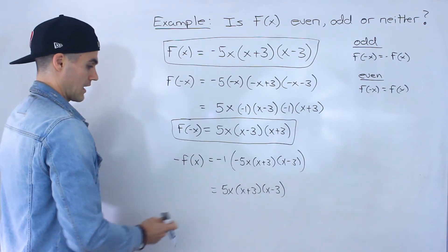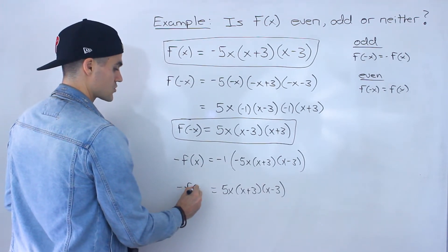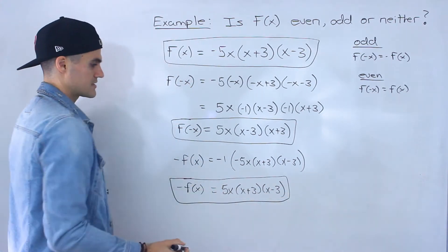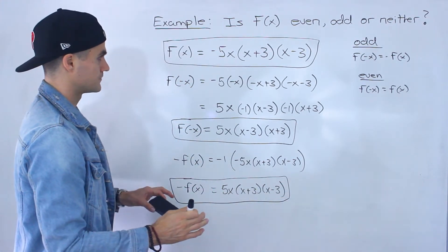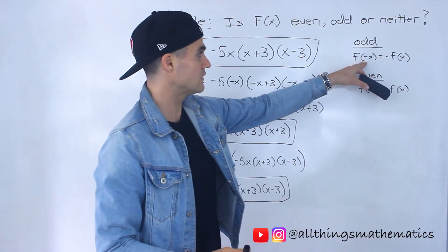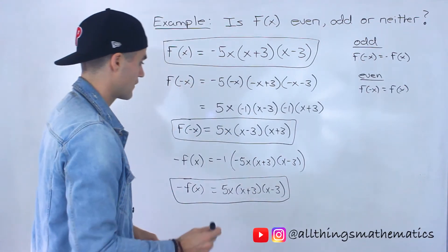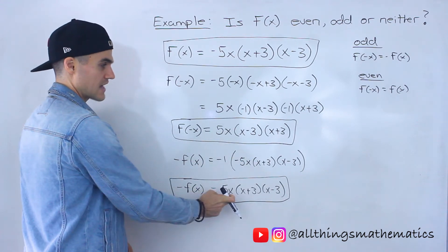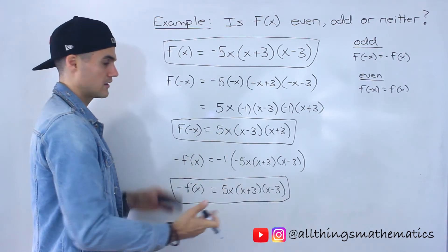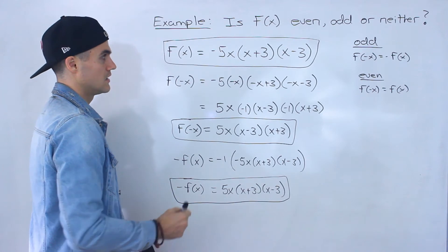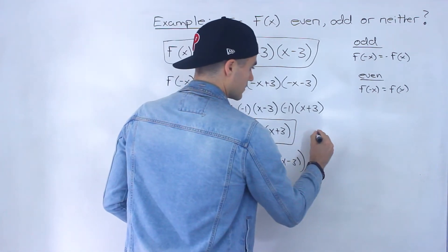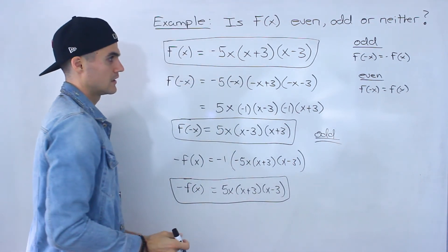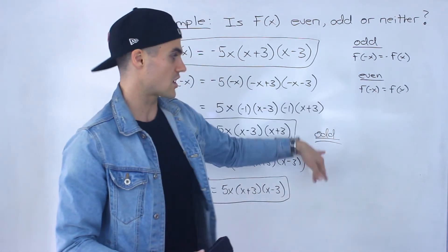This is the expression for negative f of x. Now you just check: does f of negative x equal negative f of x? Notice f of negative x is this and negative f of x is that, and notice that they are indeed the same thing in this case. So the answer to this question is that the function is odd.